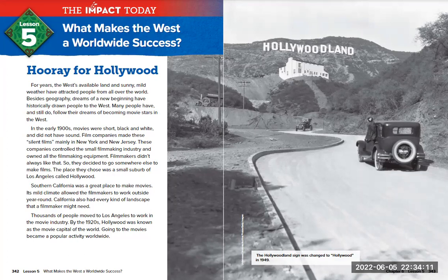In the early 1900s, movies were shot in black and white and they did not have sound. Film companies made these silent films mainly in New York and New Jersey. These companies controlled the small filmmaking industry and owned all the filmmaking equipment. Filmmakers didn't always like that, so they decided to go somewhere else to make films. The place they chose was a small suburb of Los Angeles called Hollywood. Southern California was a great place to make movies — its mild climate allowed filmmakers to work outside year round, and California had every kind of landscape a filmmaker might need. Thousands of people moved to Los Angeles to work in the movie industry, and by the 1920s Hollywood was known as the movie capital of the world. Going to the movies became a popular activity worldwide.